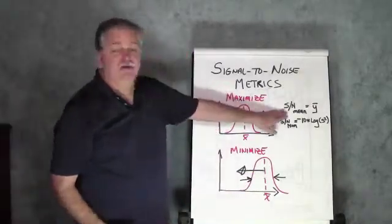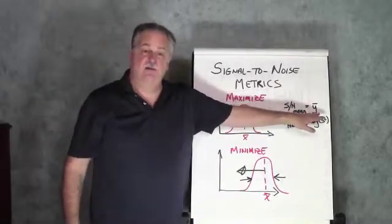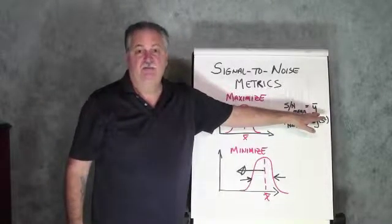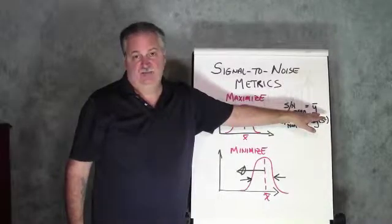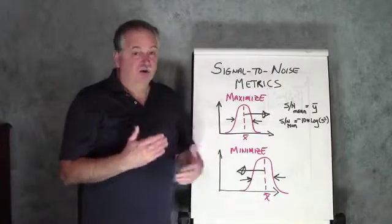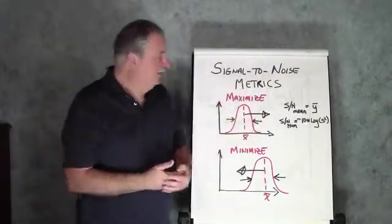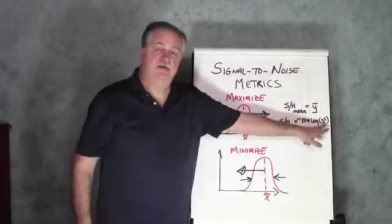So, the way to do that, the first and easiest signal-to-noise metric that I can use, would just be to use the average of each of the data points that we have for an experiment run. Now, to use these, we have to have multiple repetitions per run, so we can calculate an average value and a standard deviation.